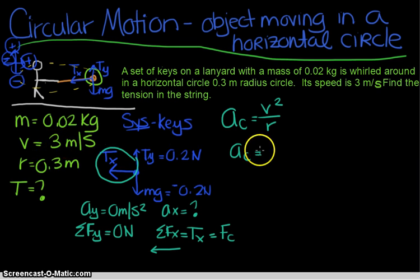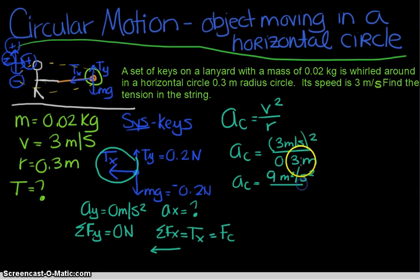We do know the speed is 3 meters per second, so we can square this term. The radius is also known, it's 0.3 meters. So what ends up happening is this becomes 9, and the units here are meters per second multiplied by meters per second, so it's meters squared per second squared, all divided by 0.3 meters. So we're just doing 9 divided by 0.3.